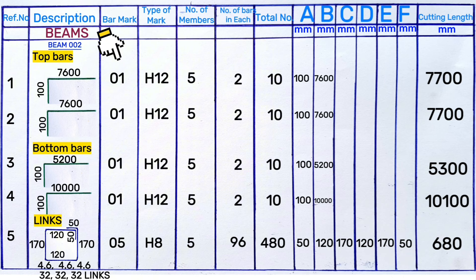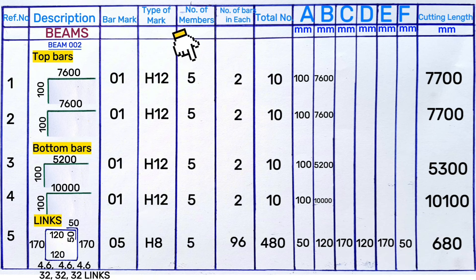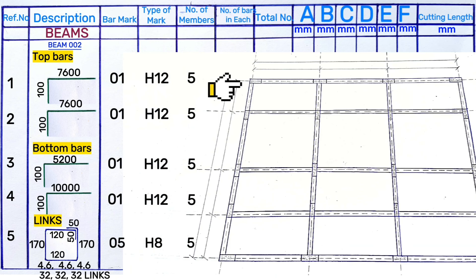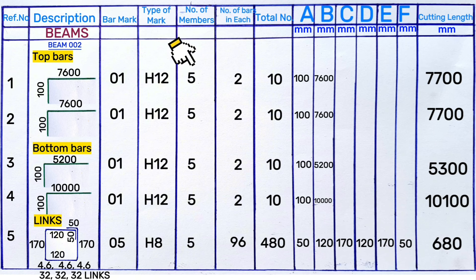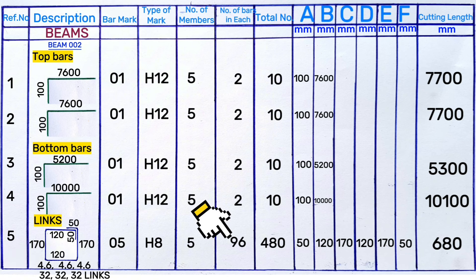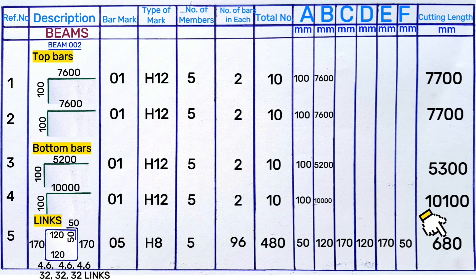To summarize all this in a bar bending schedule: top bars and bottom bars are entered with all the calculated measurements. Bar mark is 01 for beam main bars, steel bar thickness is H12 for main bars and H8 for the links. Number of members is 5 because there are 5 beams of the same dimensions. Number of bars is 2, giving a total of 10 bars. Adding 32 links for each of 4 spans gives 96 links, multiplied by 5 beams gives 418 links total. All sides A, B, C, D, E, and F are filled in the cutting length column.